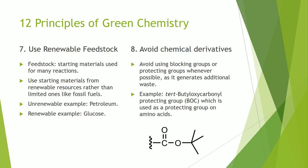Number seven: use renewable feedstock. Feedstock is the starting material that is used for many reactions, so this means to use starting material from renewable resources rather than limited ones like fossil fuels. For an example, in 2012, Bioamber Inc created a method to create succinic acid, an important starting material in many reactions, from fermented glucose rather than from petroleum, which is what it is traditionally made from.